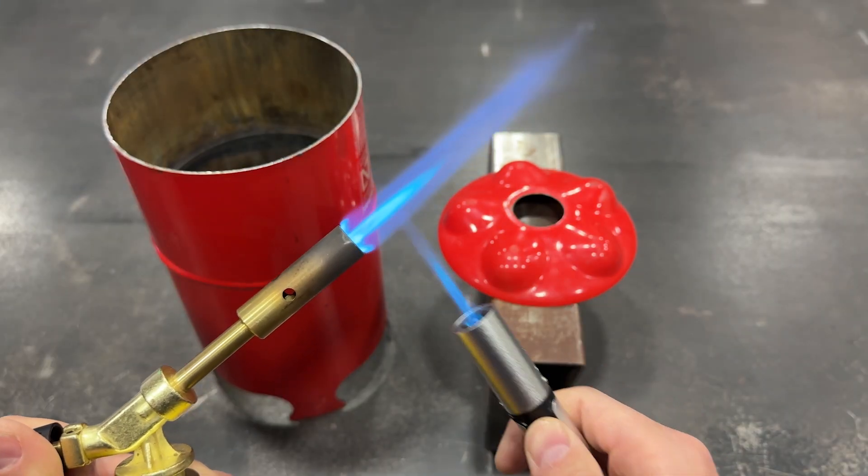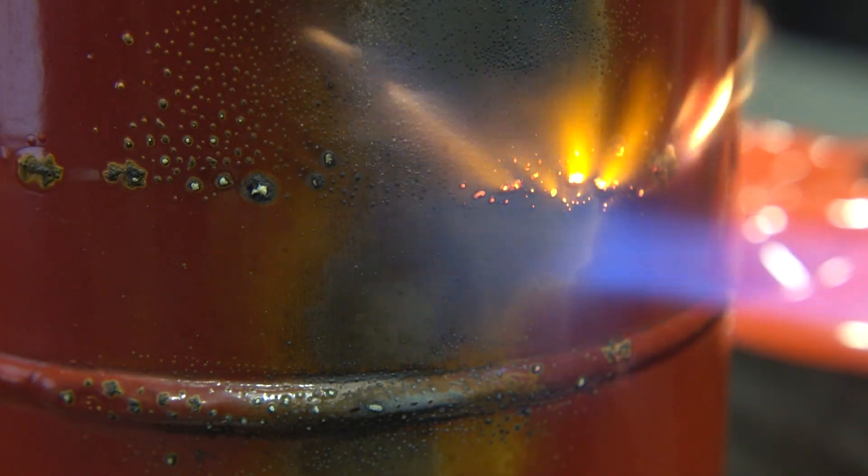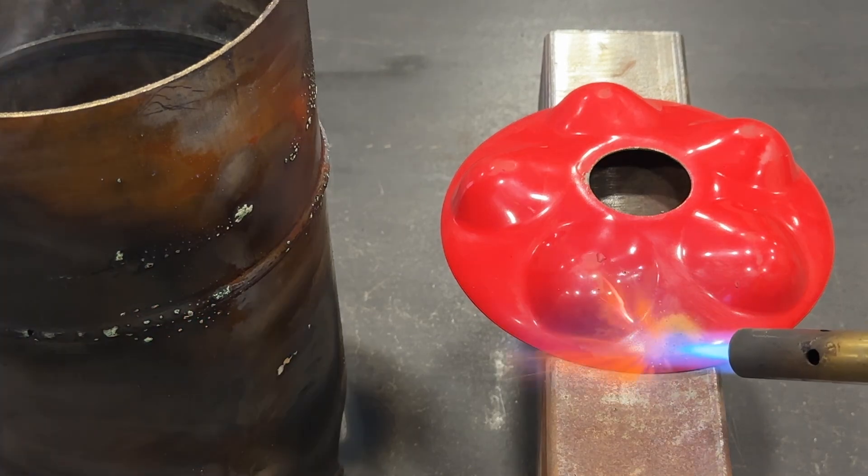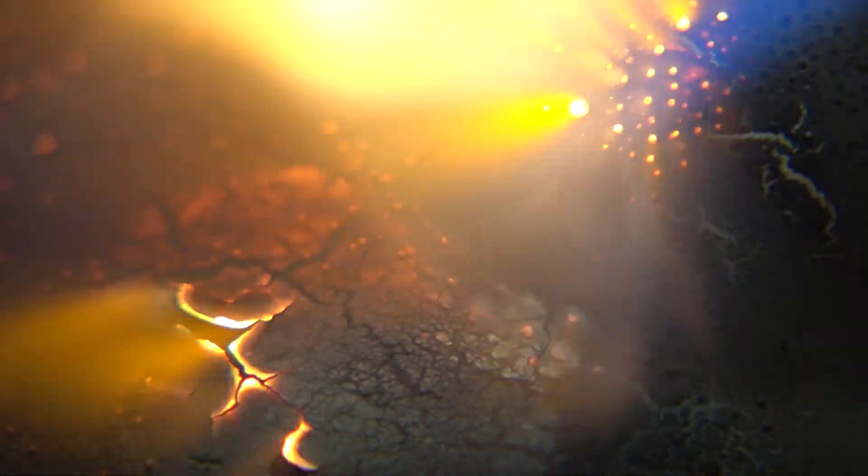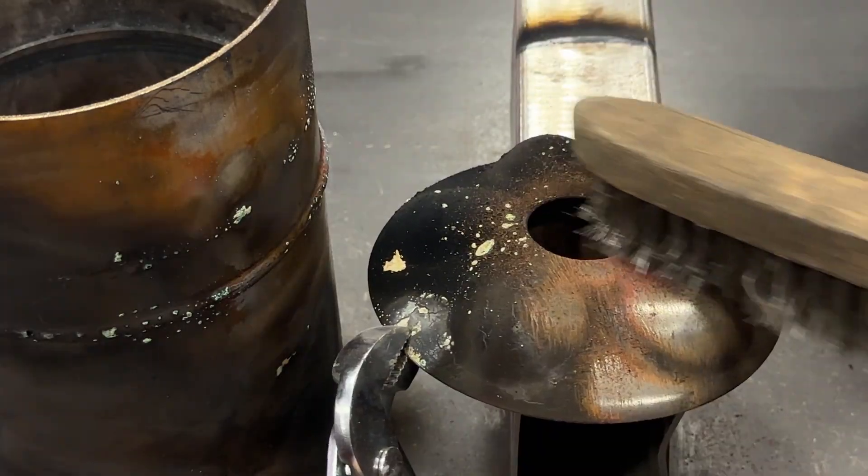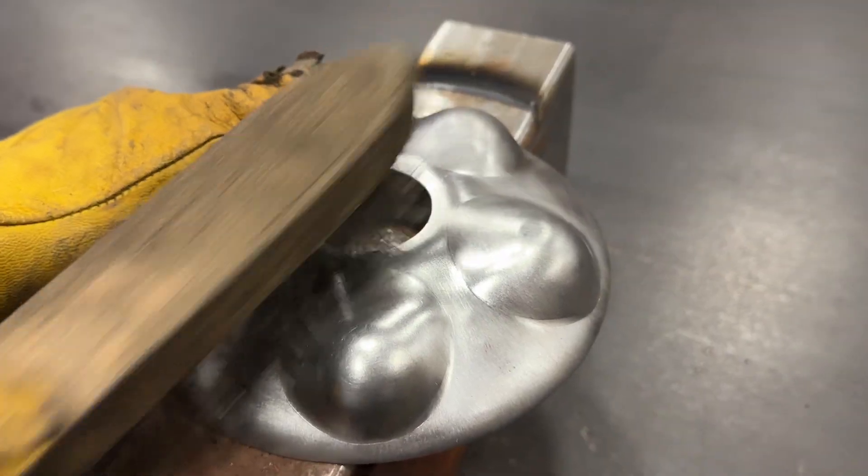Using this blowtorch, we perform a thermal stripping process to remove the old red paint from the fire extinguisher. We'll apply heat until all the paint is blackened and blistered. Then we'll scrape it off with a wire brush. We'll only be finished when the entire structure looks completely metallic.